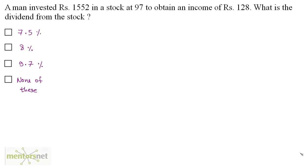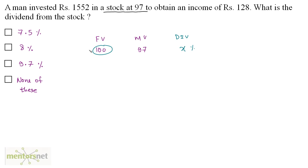A man invested Rs. 1552 in a stock at Rs. 97 to obtain an income of Rs. 128. What is the dividend from the stock? Stock at Rs. 97 means that if the face value is Rs. 100, the market value is Rs. 97 per share. Let the dividend be x percent. The market value is the investment and the dividend is the income.